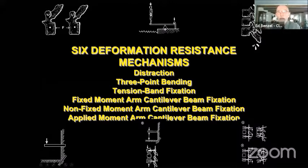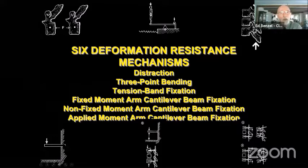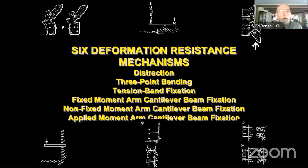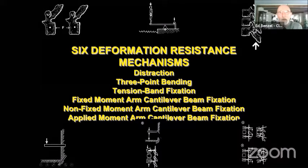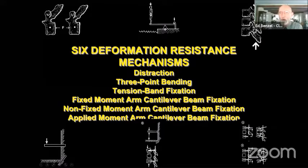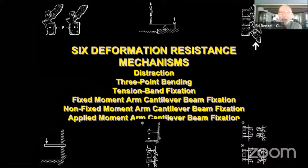We can also compress the spine using wires, clamps, or a variety of other strategies. There are three types of cantilevers. A cantilever is a beam affixed to an immobile object at one end only. If rigidly affixed, like a screw rigidly affixed to a rod, we call it a fixed moment arm cantilever beam. A beam fixed by a hinge or a toggling screw is a non-fixed moment arm cantilever beam. And we can apply bending moments with Schanz screws or Caspar bar pins — that type of beam is called an applied bending moment beam.